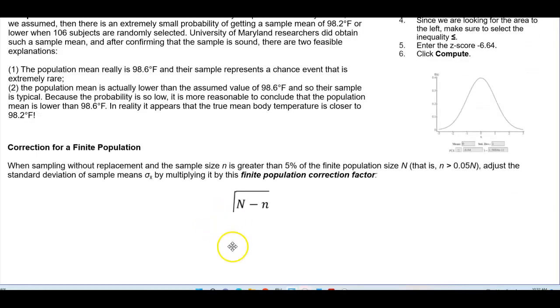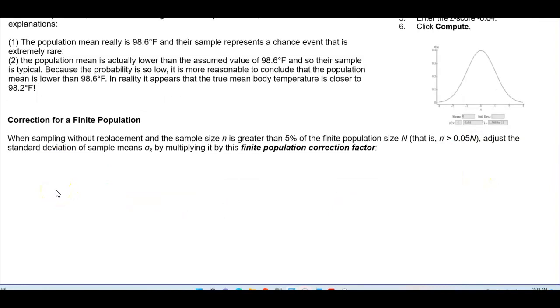And then the last part of this section is the following. Correction for a finite population. When sampling without replacement and the sample size n is greater than 5% of the finite population of size capital N, that is, the sample size n is greater than 5% of the population, we adjust the standard deviation of sample means by multiplying it by this finite population correction factor. So, it would be the square root of the population N minus the sample size n divided by the population N minus 1.